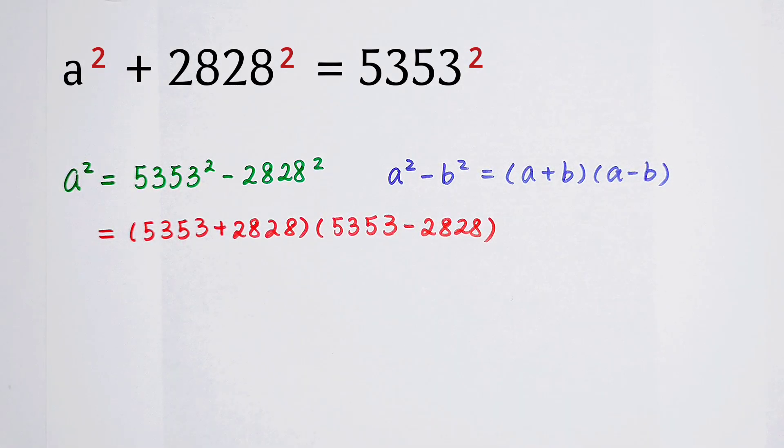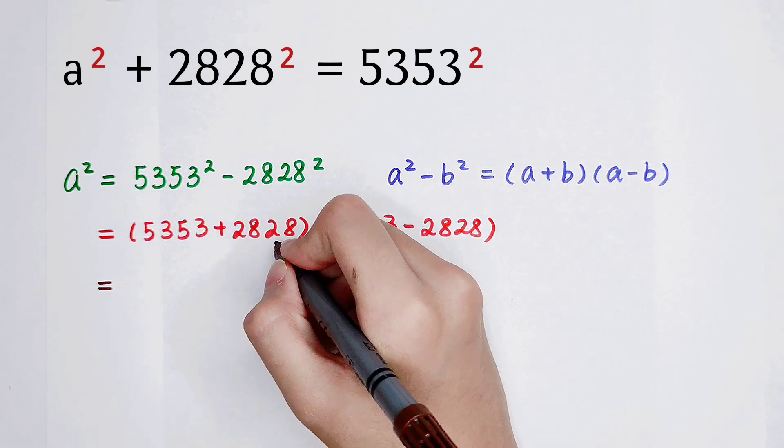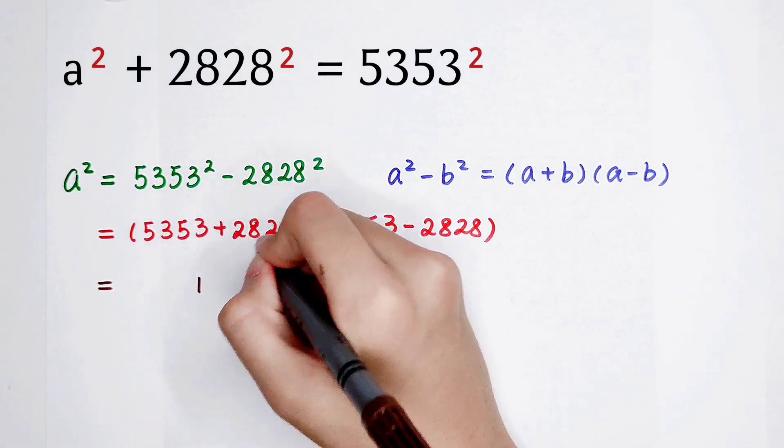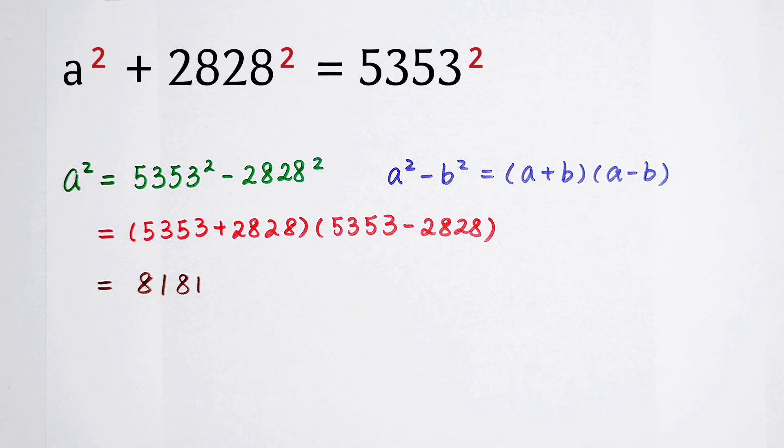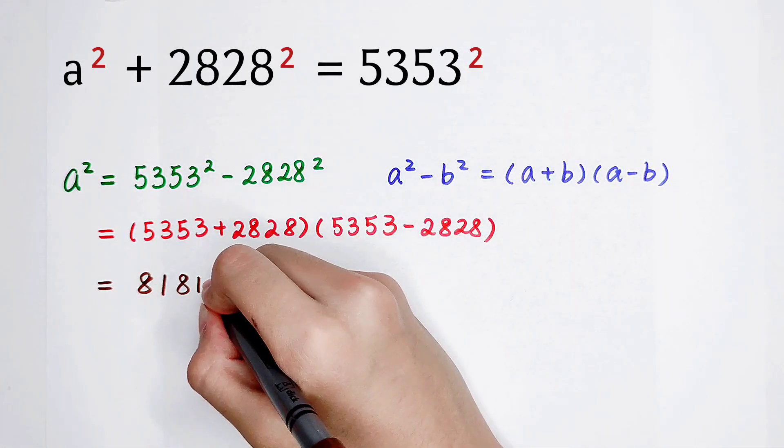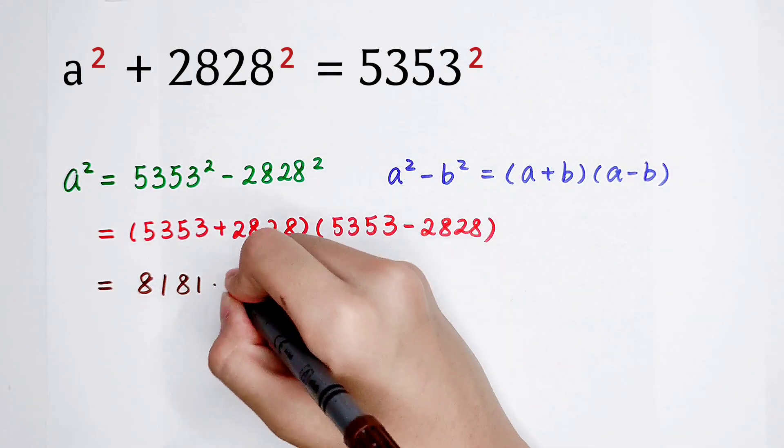Okay, continue doing it. This here is 8181. And then times what's this? It's 2525.